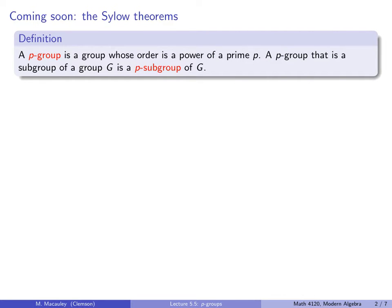First, we need a definition, which is the title of this lecture. A p-group is a group whose order is a power of a prime p. A p-group that is a subgroup of another group G is called a p-subgroup of G. Notice I say power of a prime — if it were just prime, it would be a cyclic group, but it's not necessarily.